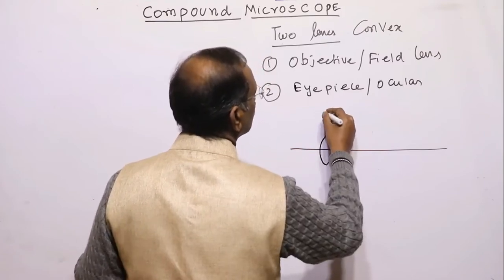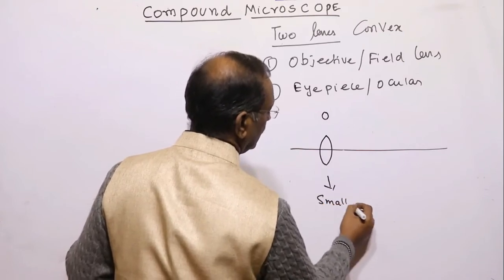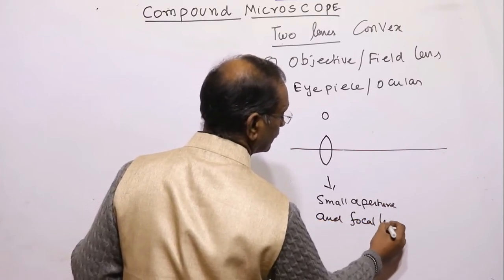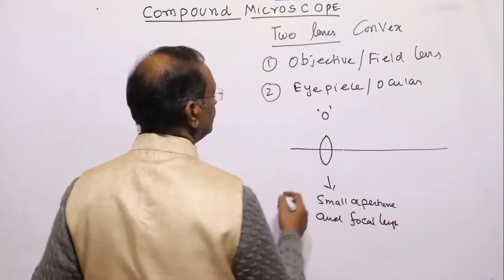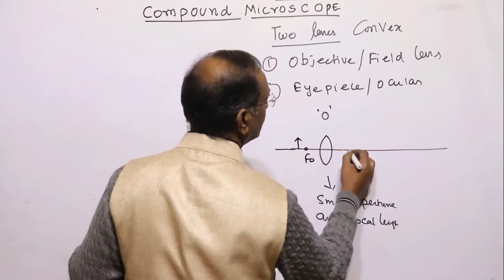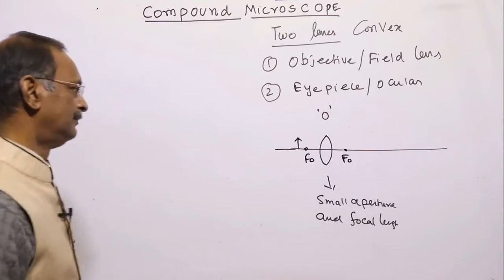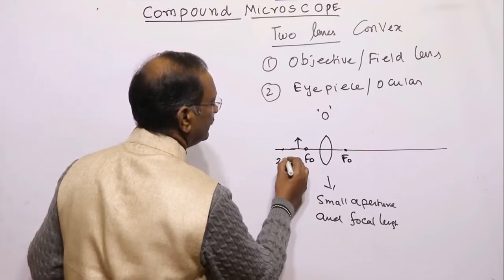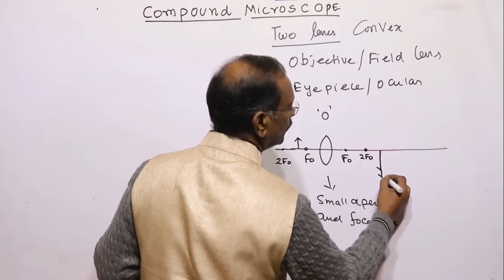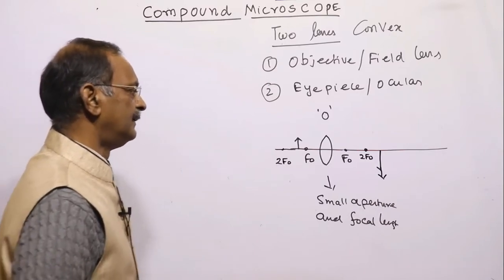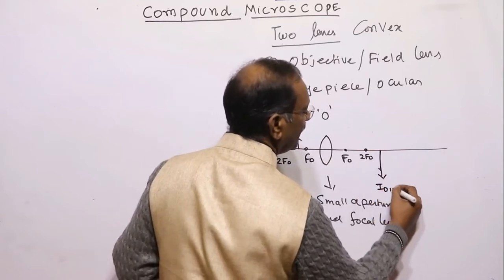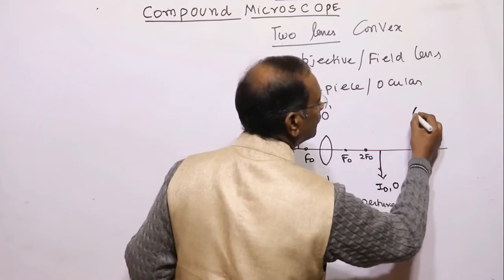The objective has a small aperture and focal length. It faces the objects. An object is kept beyond the focal length. If an object is placed between f-naught and 2f-naught, its magnified image will be formed beyond 2f-naught, as we have seen from lens theory. This image of the objective behaves as the object for the bigger lens, that is, the eyepiece.